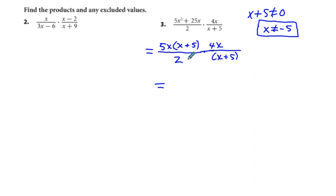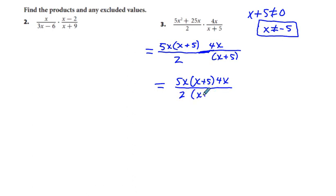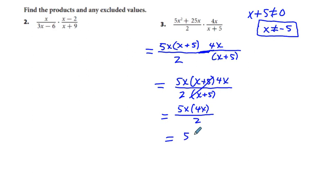We multiply all these together under one single division bar. So we have 5x times quantity x plus 5 times 4x, all over 2 times x plus 5. The x plus 5 factors cancel. Remaining, we have 5x times 4x over 2. The 4 divided by 2 is 2, so we have 5x times 2x, and our answer is 10x squared.